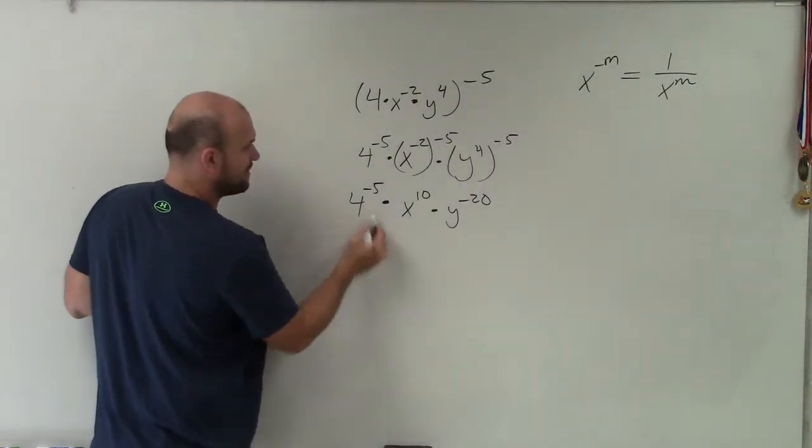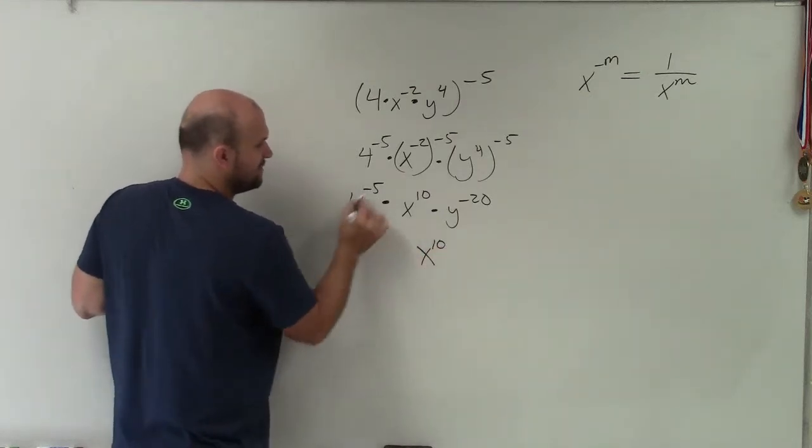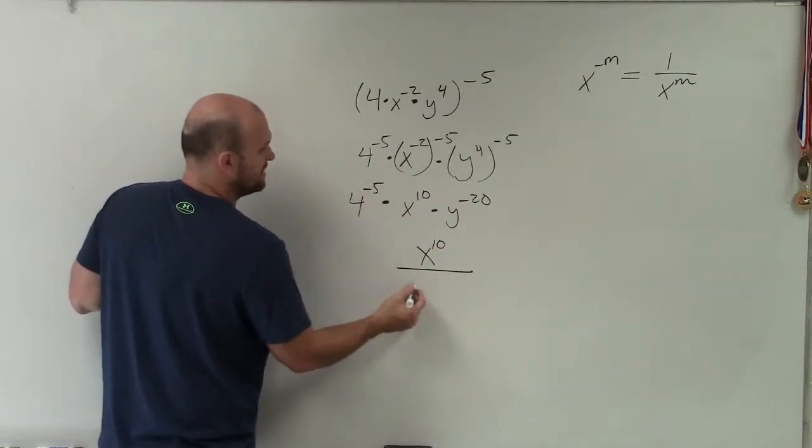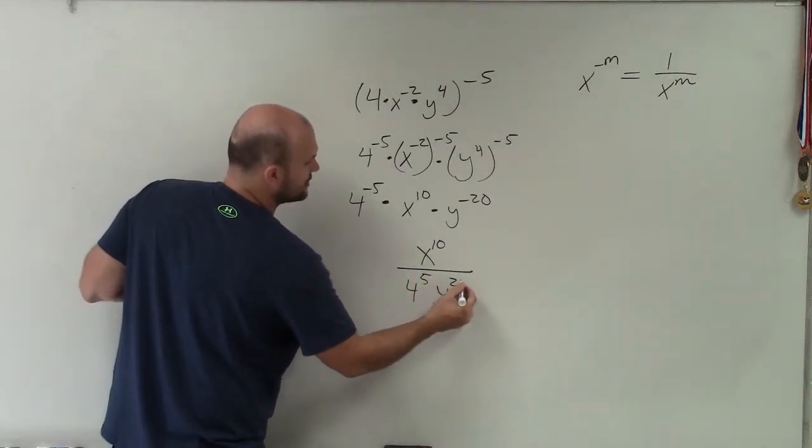So therefore, to rewrite this with positive exponents, the x to the 10th is positive, so that can remain in the numerator. However, these, to rewrite them as positive, I now need to rewrite them in the denominator. So that's 4 to the 5th and y to the 20th.